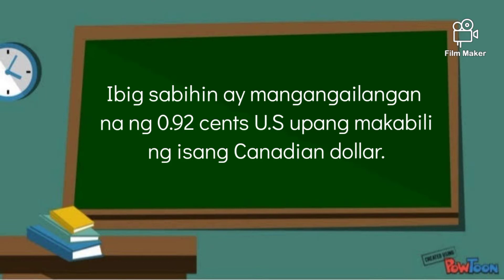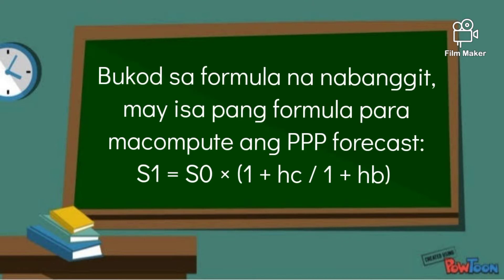Ibig sabihin ay kailangan ng 92 US cents upang makabili ng isang Canadian dollar. Bukod sa formula na nabanggit, may isa pang formula para makompute ang PPP forecast. Ito ang S1 is equal to S0 times 1 plus HC over 1 plus HB.